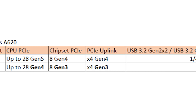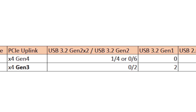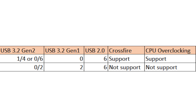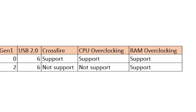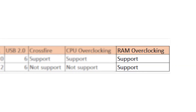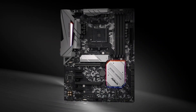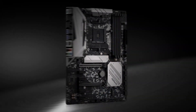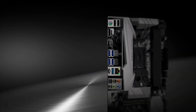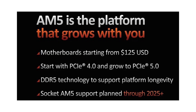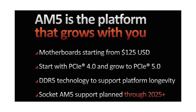There are other downgrades as well, like less support for higher bandwidth USB connections, no Crossfire support, and no support for CPU overclocking. But interestingly, A620 chipset motherboards will support RAM overclocking, which was absent in previous A520 and A320 chipsets. However, unlike A520 and A320, A620 motherboards won't be cheap at all and will sell for $125 as the minimum price.